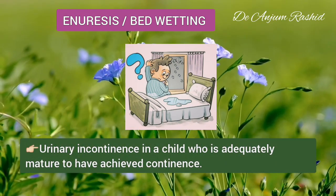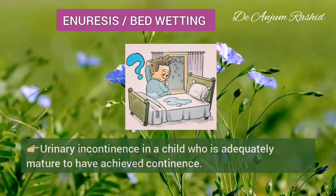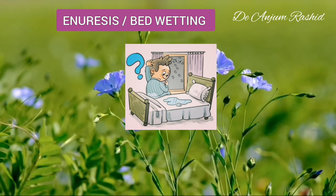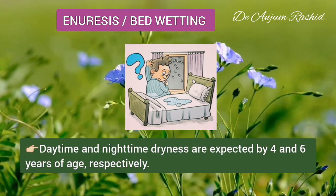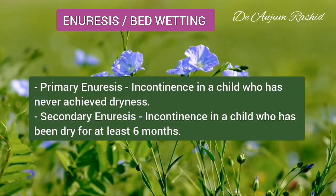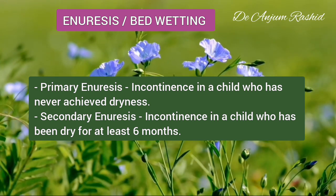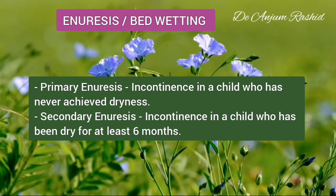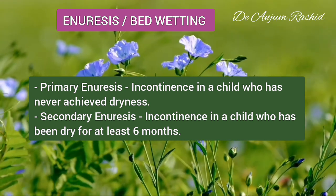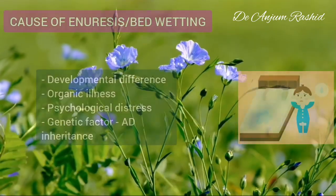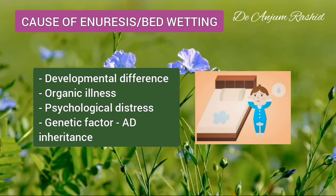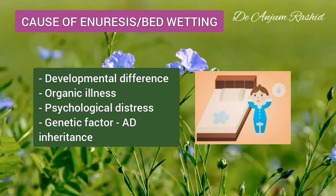Enuresis is urinary incontinence in a child who is adequately matured to have achieved continence. Enuresis is classified as diurnal (daytime) or nocturnal (nighttime). Daytime and nighttime dryness are expected by four and six years of age respectively. Another useful classification is primary and secondary enuresis. Primary enuresis is incontinence in a child who has never achieved dryness, and secondary enuresis is incontinence in a child who has been dry for at least six months. Enuresis is a symptom with multiple possible etiological factors, including developmental differences, organic illness, or psychological distress.